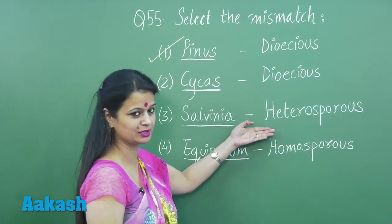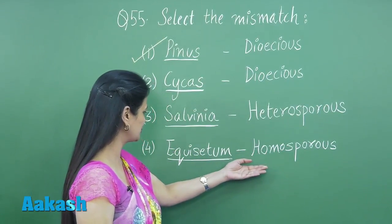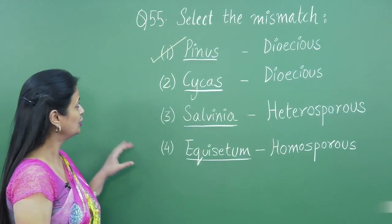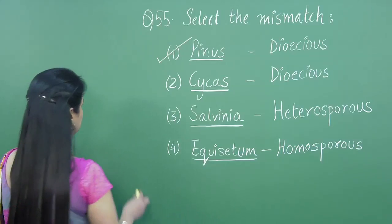It produces two kinds of spores, and the homosporous one is Equisetum, which is again a pteridophyte. So looking into question number 55, the right answer is option number one.